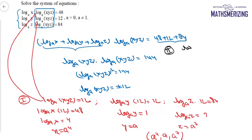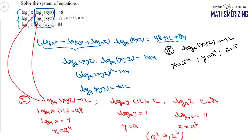In Case 2, taking log_a(xyz) equals minus 12, we get the same results but with negative signs. So x equals a to the power minus 4, y equals a to the power minus 1, and z equals a to the power minus 7, giving the solution x = 1/a⁴, y = 1/a, z = 1/a⁷.